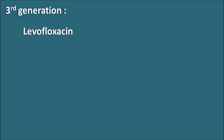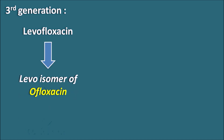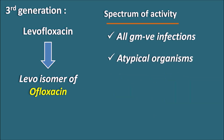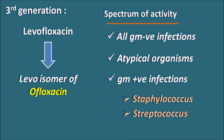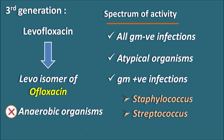Next are the third generation fluoroquinolones. The only drug currently available in this generation is levofloxacin, which is the levo-isomer of ofloxacin (ofloxacin is optically active). Levofloxacin has an extended spectrum of activity: it is effective against all types of gram-negative infections, atypical organisms, and gram-positive infections such as Staphylococcus aureus and Streptococcus pneumoniae. However, levofloxacin is ineffective against anaerobic organisms — a limitation addressed by the next generation.